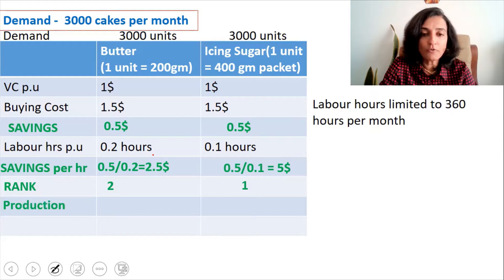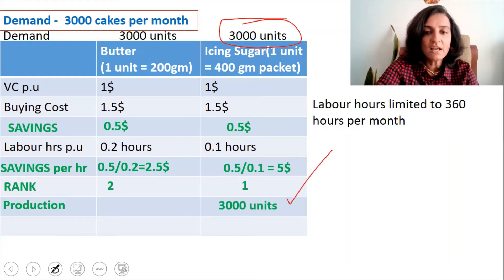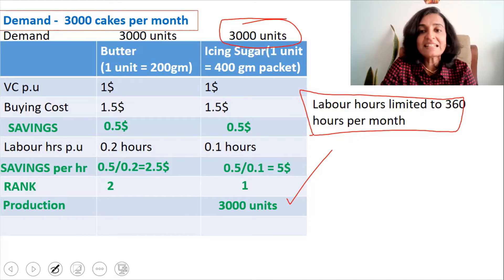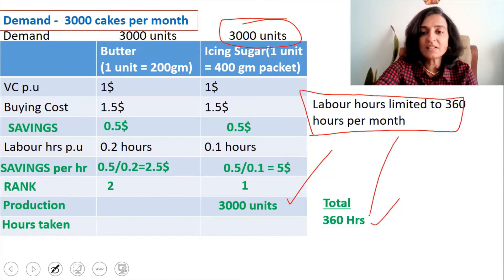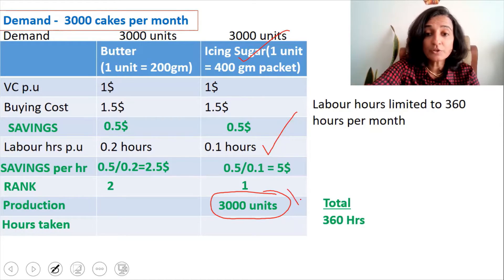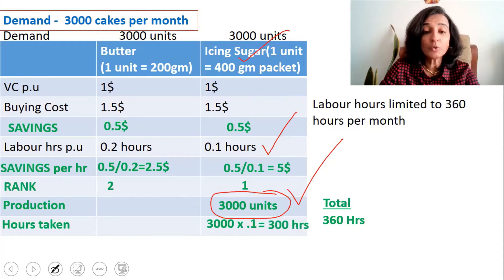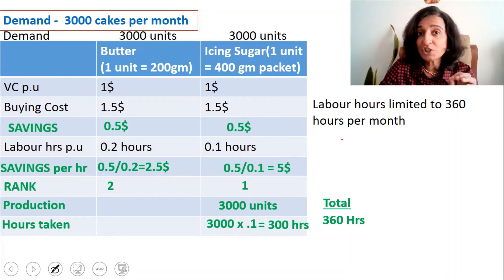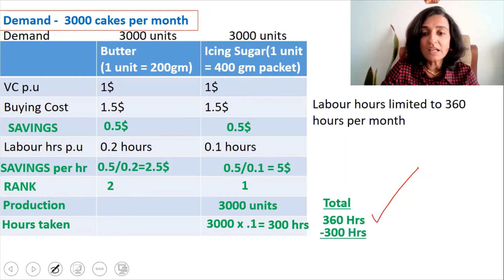We will start production of icing sugar. The demand for icing sugar is 3,000 units, so we need to produce 3,000 units. Labor hours is limited to 360 hours per month. For making 3,000 units of icing sugar, the time taken is 3,000 × 0.1 hours = 300 hours. So once we complete production of icing sugar, 300 hours is gone. Out of 360 hours, we reduce 300, leaving a balance of only 60 hours.